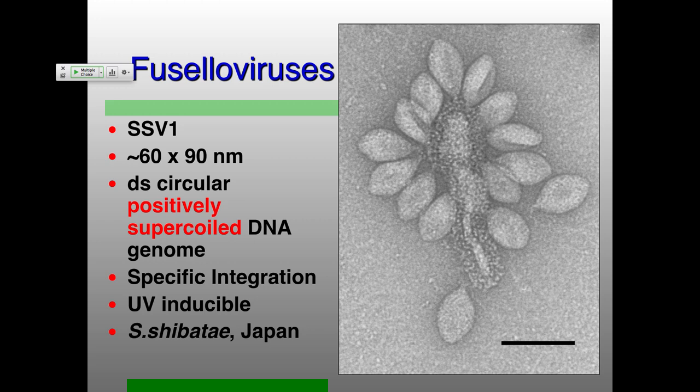Speaking of morphological diversity, let's spend a couple minutes talking about the Fuseloviruses. This is an electron micrograph of multiple virions of SSV1 — Sulfolobus spindle-shaped virus 1. They have a really unique morphology: about 60 nanometers across by 90 nanometers in length, with a short tail structure at one end, and neither icosahedral symmetry nor obvious helical symmetry.